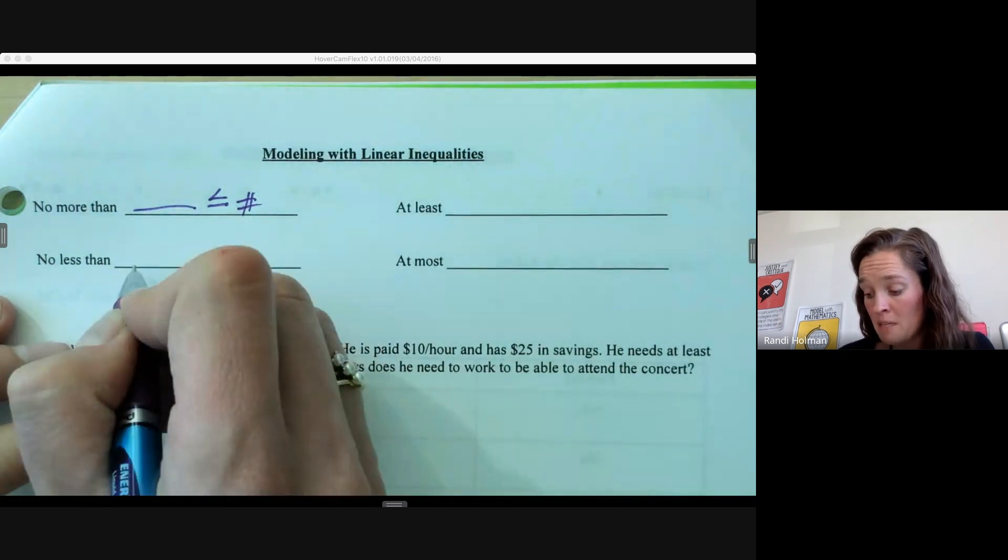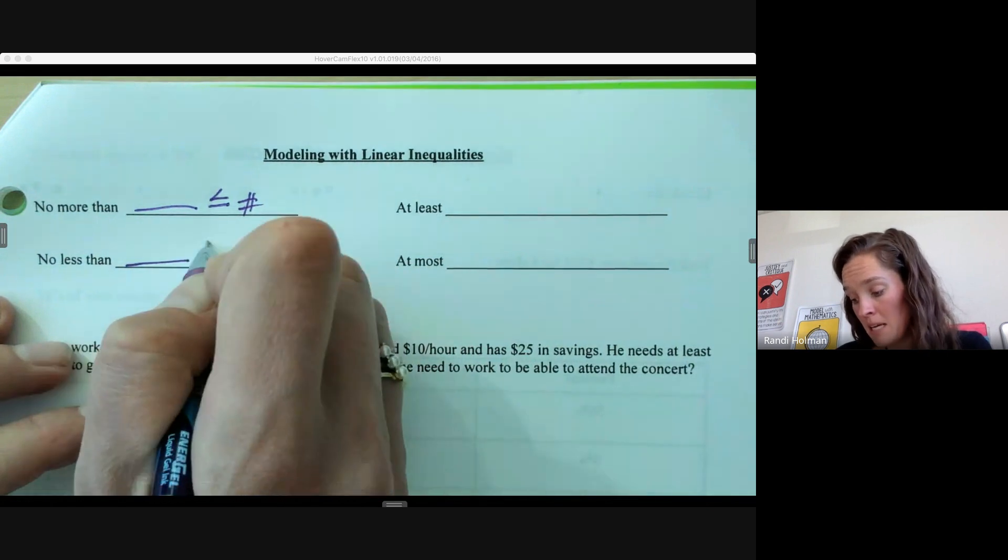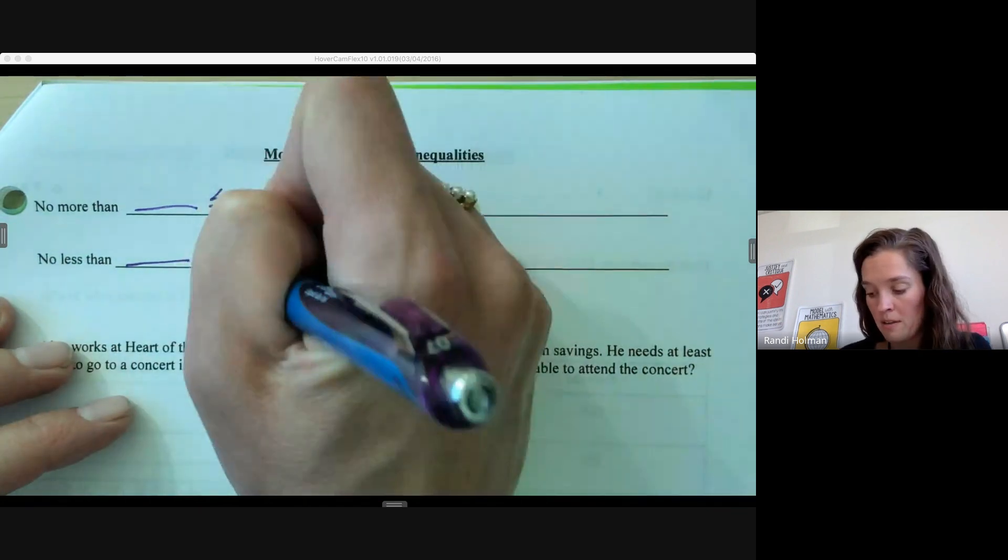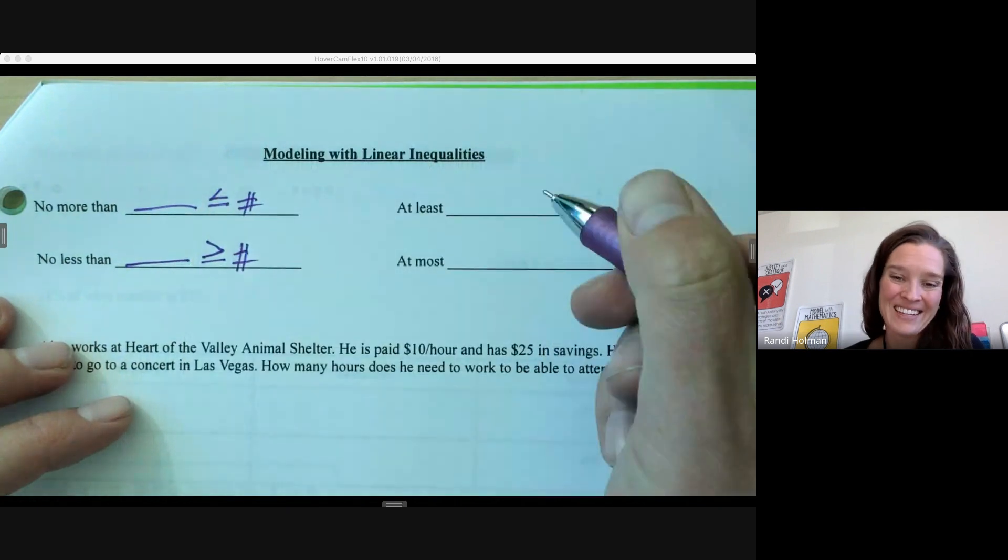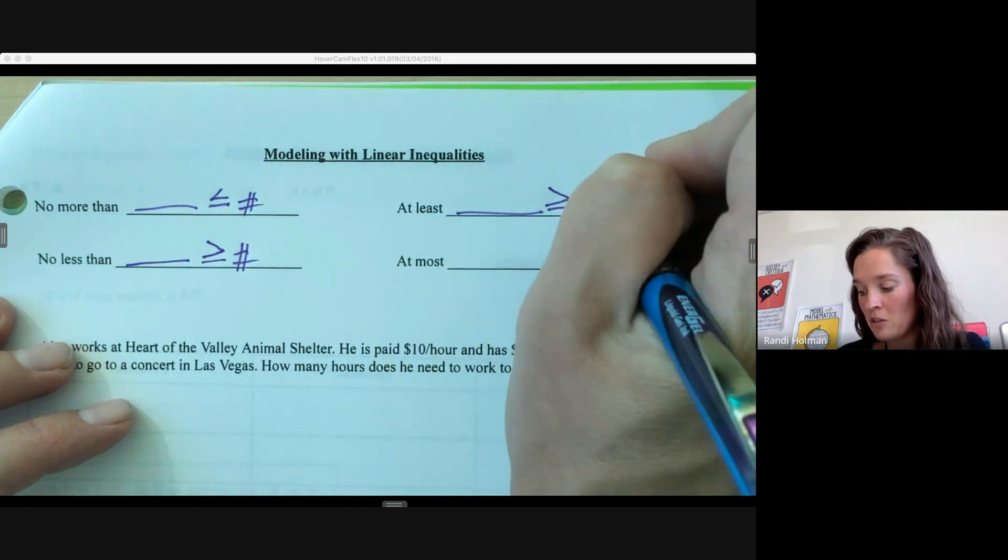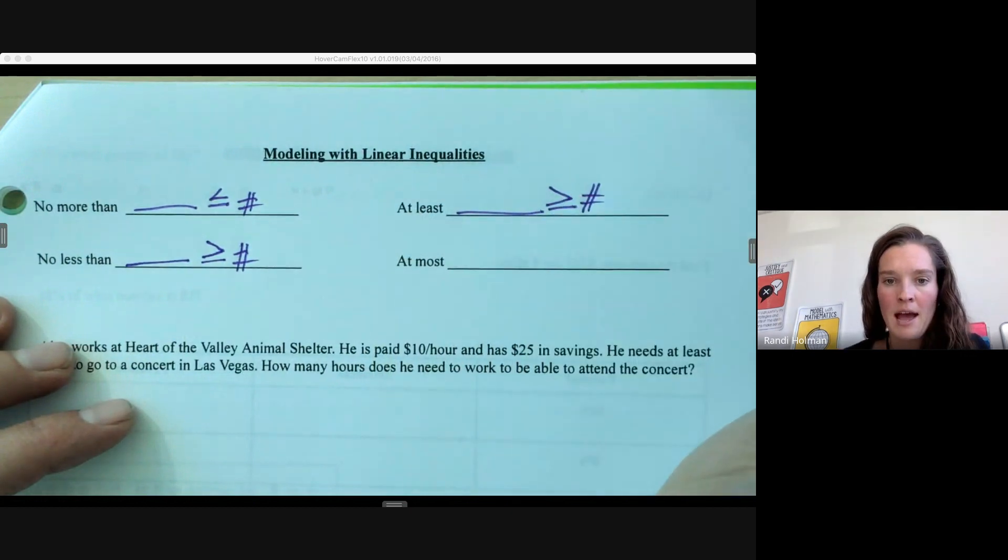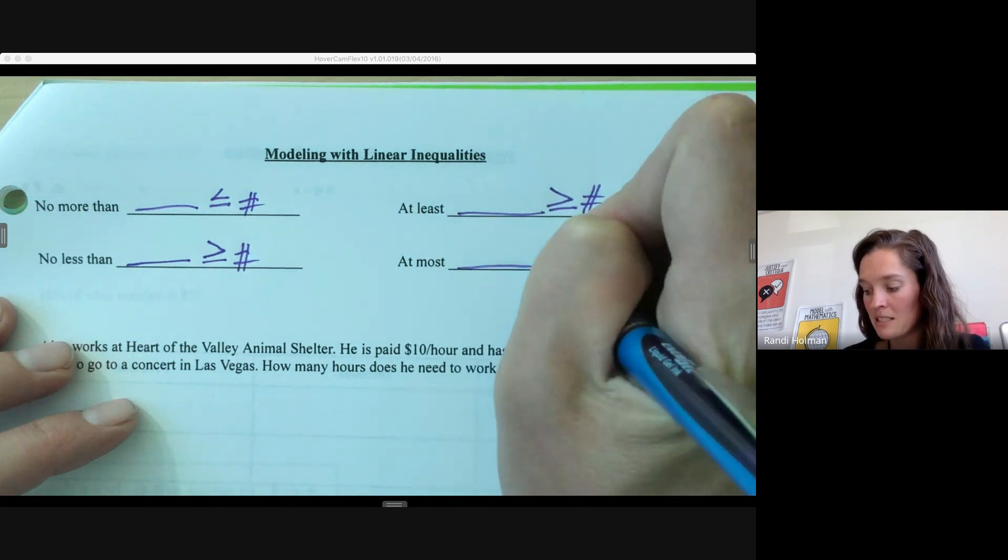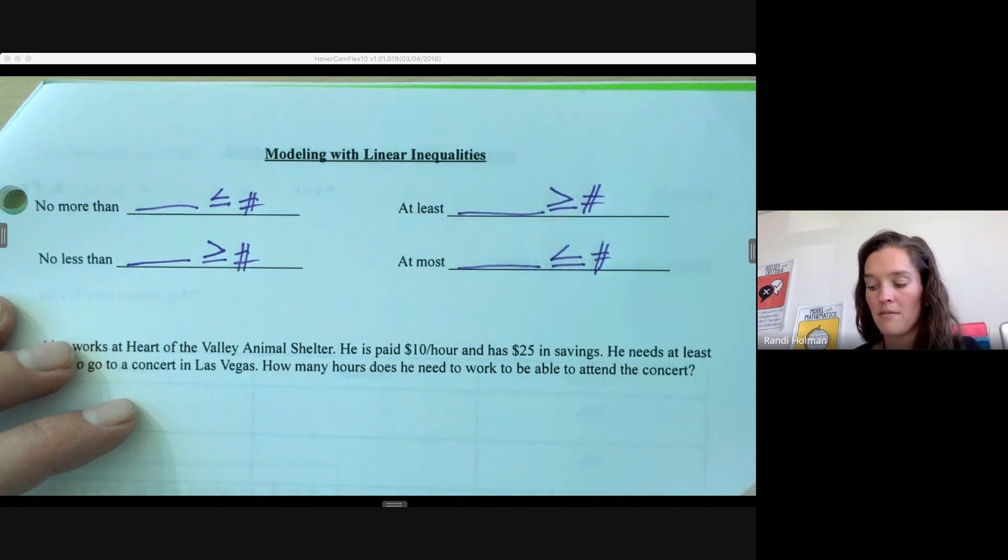No less than means it has to be at least greater than or equal to whatever the value is. At least—I just used that—means whatever we're looking at has to be bigger than or equal to the value. At most means it has to be less than or equal to whatever value.